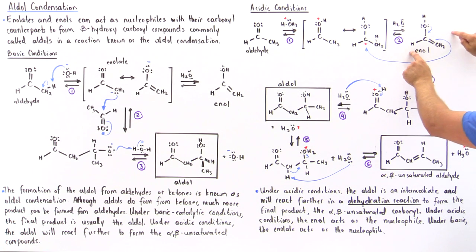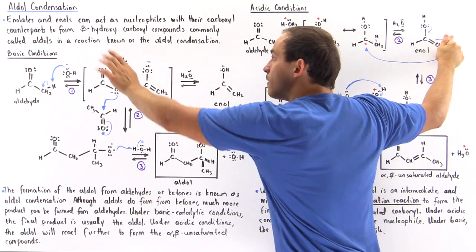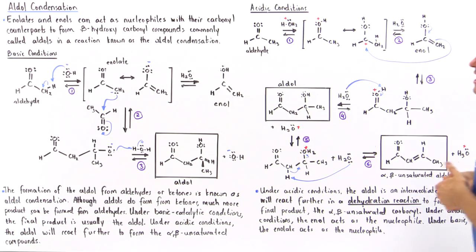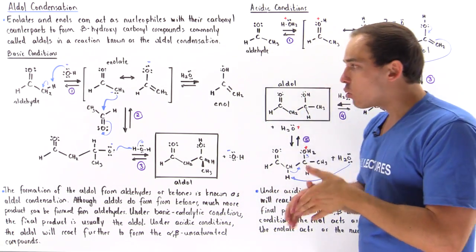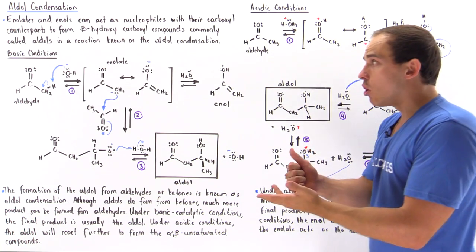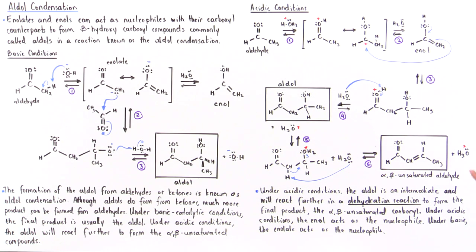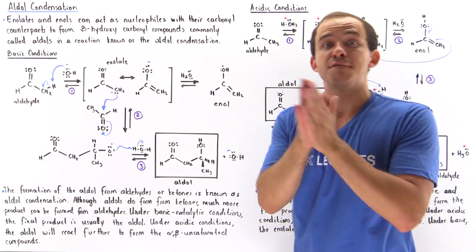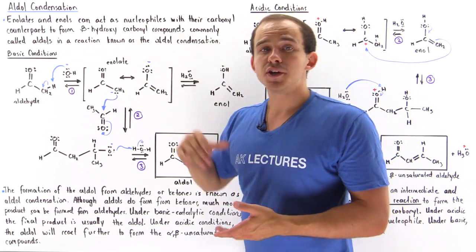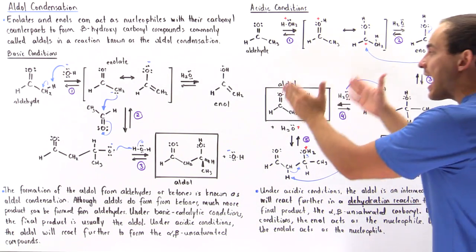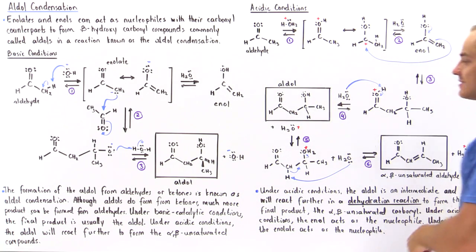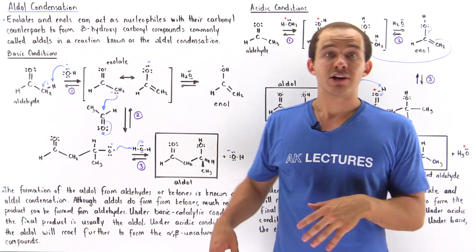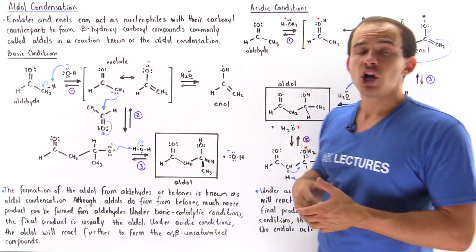To summarize: whenever the enolate acts as a nucleophile and the final product is our aldol, that is under basic conditions. Whenever our enol reacts as the nucleophile to form our aldol intermediate, that is the acidic condition — and under acidic conditions the aldol is an intermediate that undergoes a two-step dehydration reaction to form the alpha-beta-unsaturated aldehyde or ketone, depending on what our initial starting carbonyl compound is.